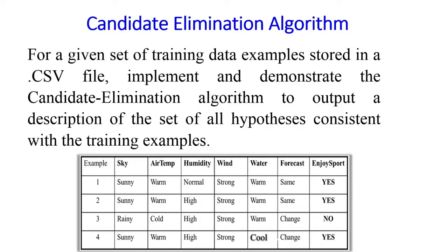Hello everyone. Today we will see program number two in machine learning laboratory: the candidate elimination algorithm. The problem given is for a given set of training data examples stored in a .csv file, implement and demonstrate the candidate elimination algorithm to output a description of the set of all hypotheses consistent with the training examples. The given training example is the same as used in the Find-S algorithm, that is the enjoy sport training example, consisting of six attributes and a labeled target concept.